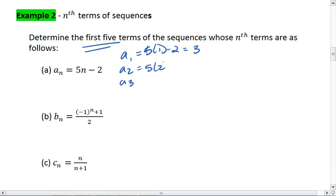For the second term, I plug in 2 for n. I get 5 times 2 minus 2, which is 8. For the third term, I plug in 3. 5 times 3 minus 2 is 13. And if I continue to plug in, this pattern will repeat.